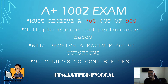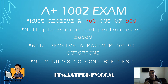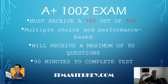Every CompTIA test is scored on a scale of 900. On this test, you've got to have 700. The only test that's not out of a scale of 900 is CASP+, which is pass or fail. On this exam, the types of things you're going to see are multiple choice questions and performance-based questions.